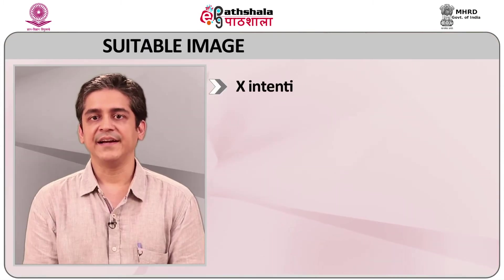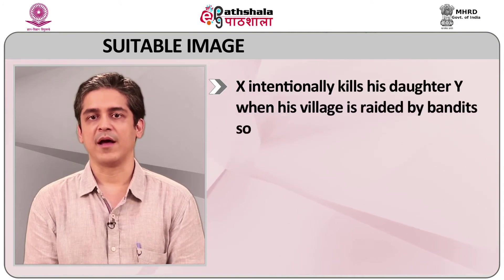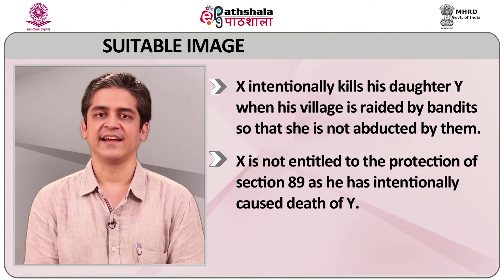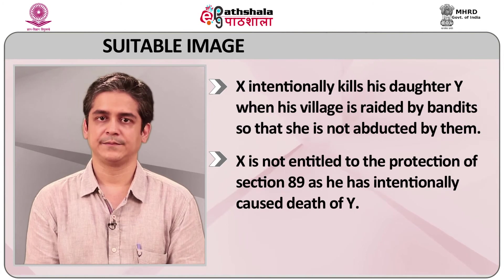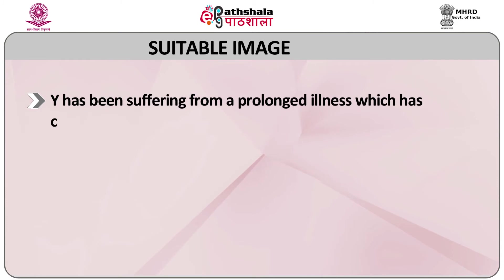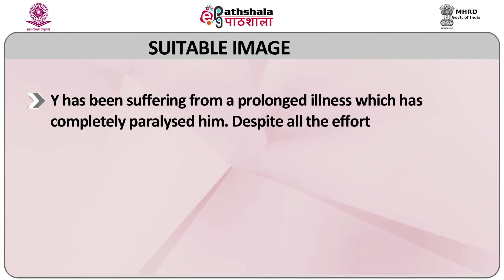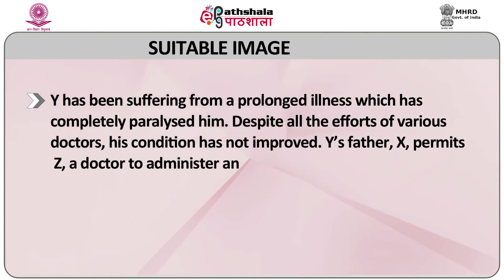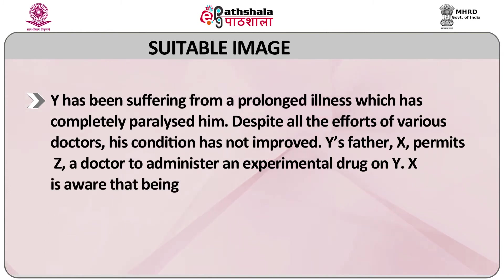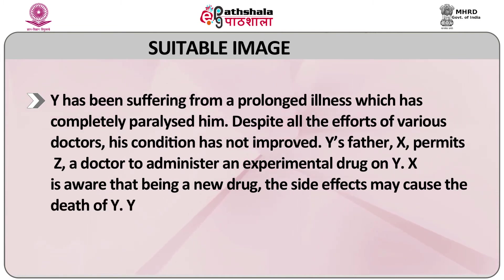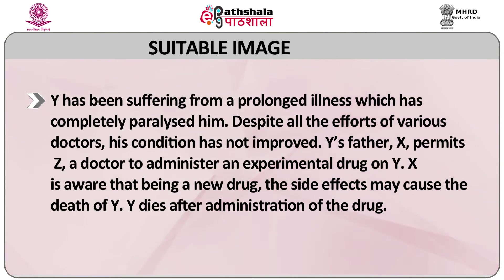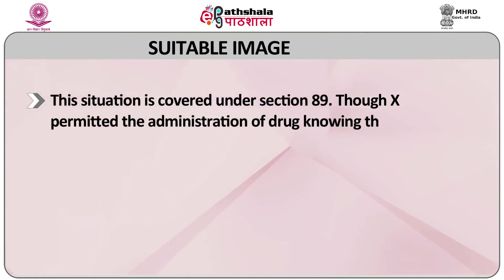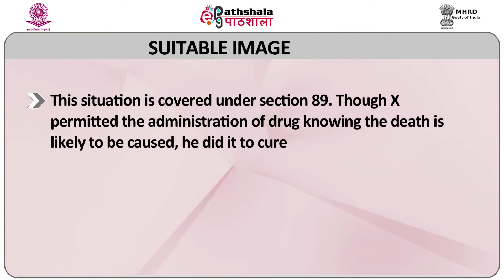Let's consider this example. X intentionally kills his daughter Y when his village is raided by bandits so that she is not abducted by them. In this case, X is not entitled to the protection of section 89 as he has intentionally caused the death of Y. Let's consider another example. Y has been suffering from a prolonged illness which has completely paralyzed him. Despite all the efforts of various doctors, his condition has not improved. Y's father X permits Z, a doctor, to administer an experimental drug on Y. X is aware that being a new drug, the side effects may cause the death of Y. Y dies after administration of the drug. This situation is covered under section 89 — though X permitted the administration of the drug knowing death is likely to be caused, he did it to cure Y from paralysis.